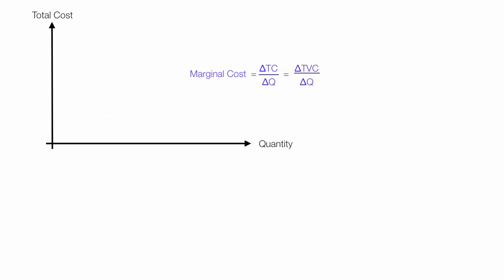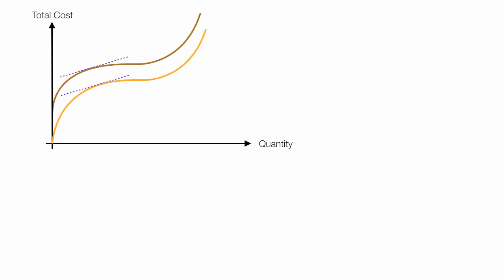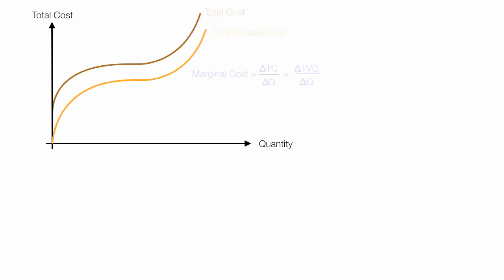So really, the change in total cost is equal to the change in total variable cost. If I draw in the total cost and total variable cost curves and pick a point and look at the slopes of these two lines, the slope of total cost and the slope of total variable cost are the same — those two lines are parallel all along the curves. So marginal cost is equal to the change in total variable cost divided by the change in quantity as well. They're equivalent.